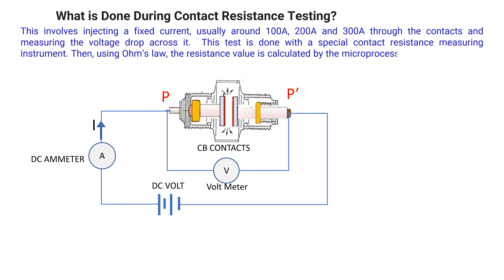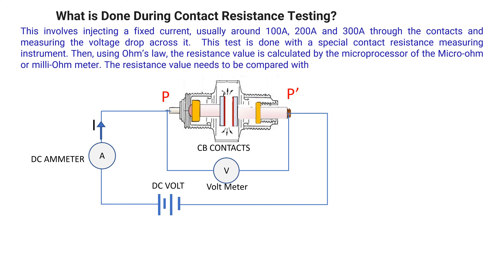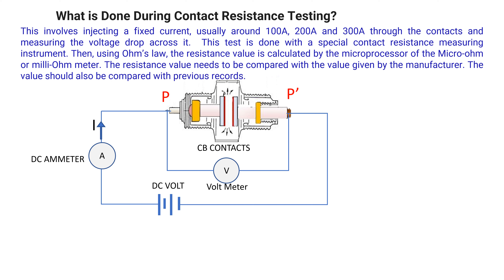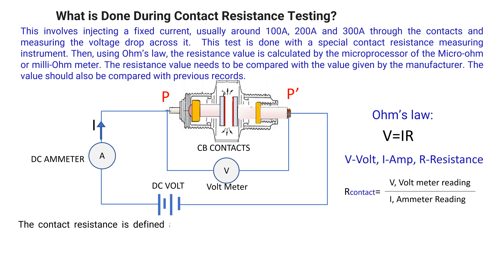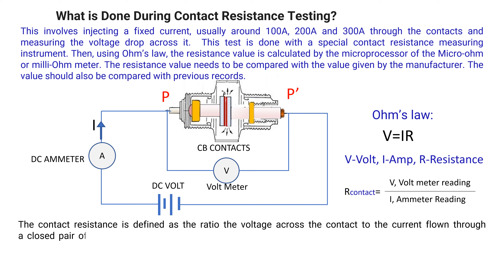The resistance value is calculated by the microprocessor of the micro-ohm or milli-ohm meter. The resistance value needs to be compared with the value given by the manufacturer, and also with previous records. From Ohm's law, V = IR, where V is the measured voltage and I is the measured current. The contact resistance R_contact equals V (voltmeter recorded reading) divided by I (ampere reading). Contact resistance is determined as the ratio of voltage across the contact to the current flowing through a closed pair of contacts, in accordance with Ohm's law.